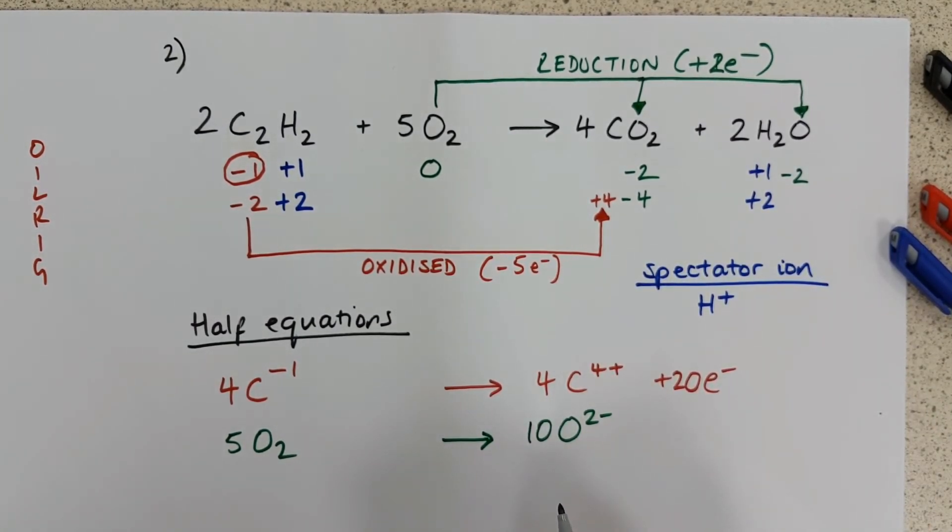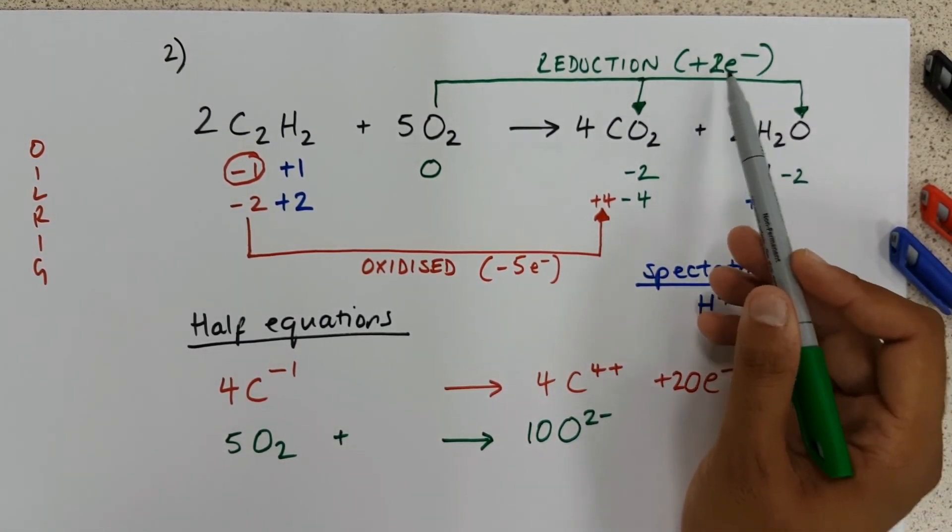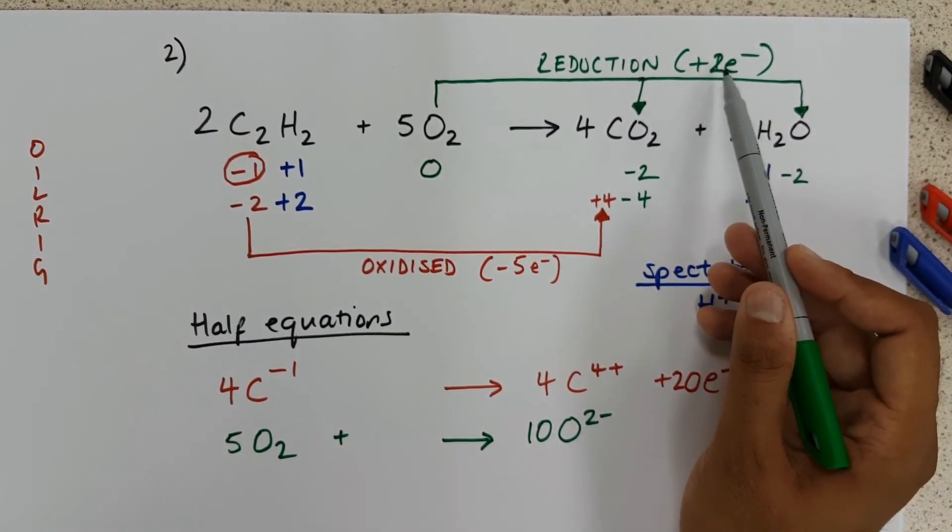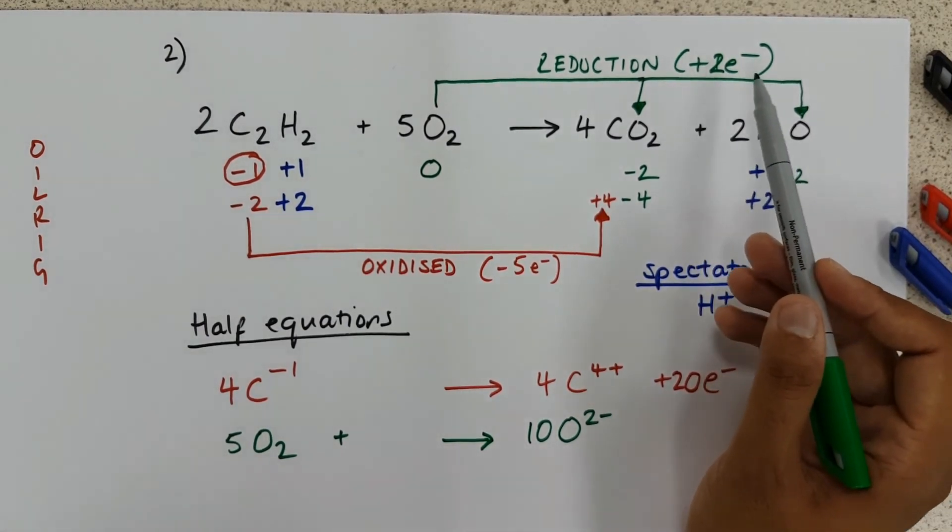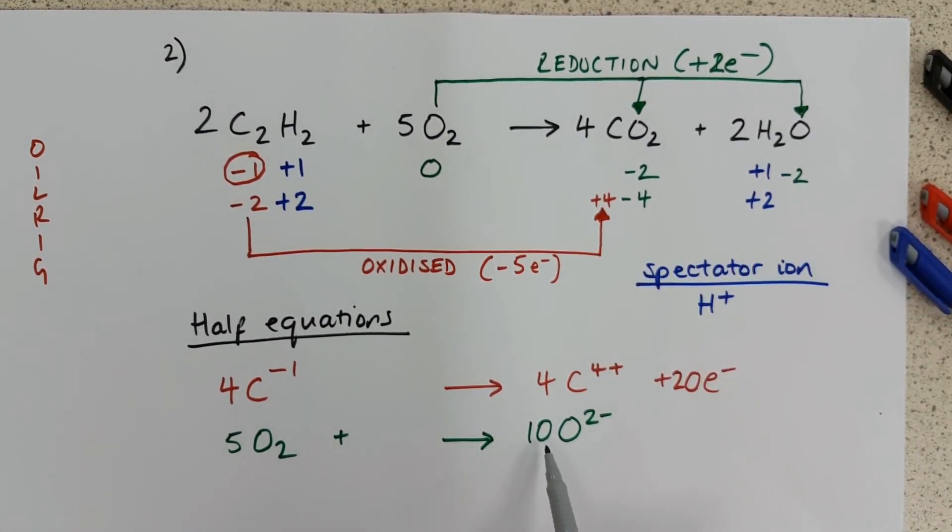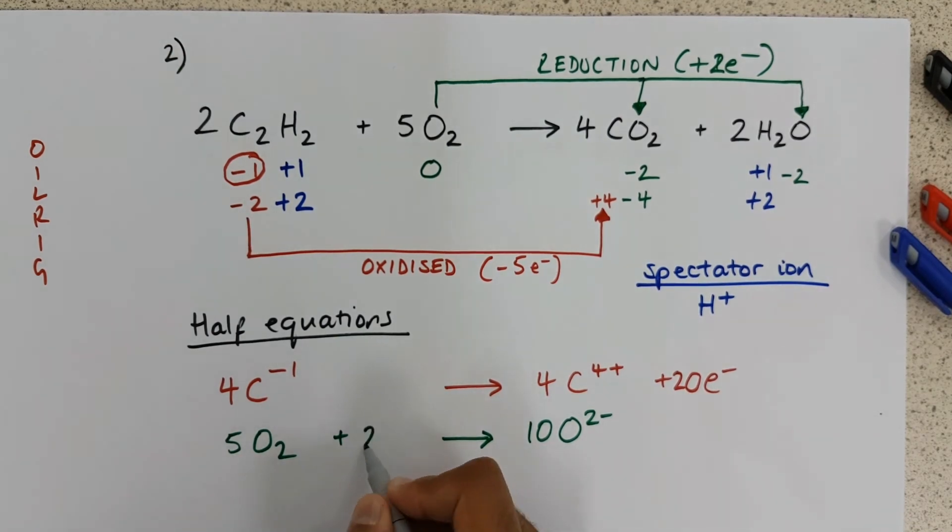...ten oxide ions. And again, if each oxygen ion has gained two electrons, altogether we have ten of them. That gives us 20 electrons.